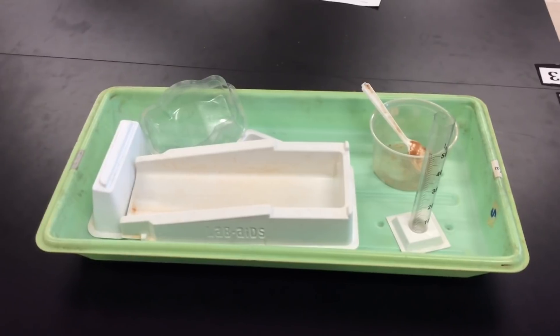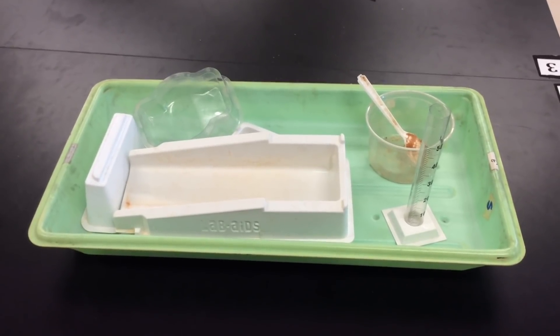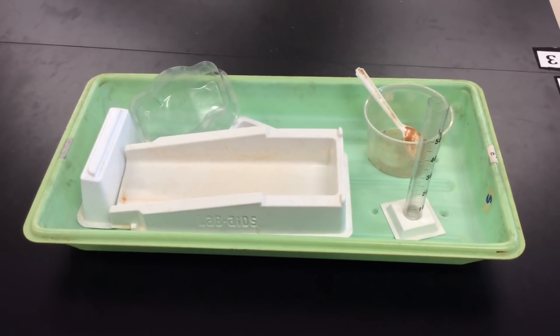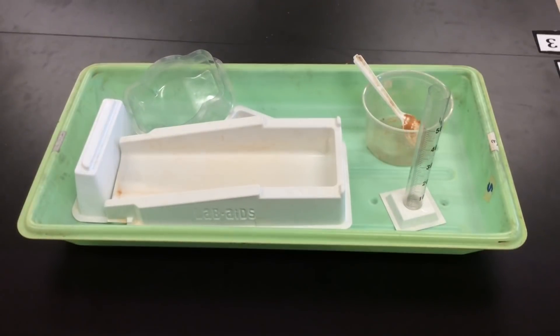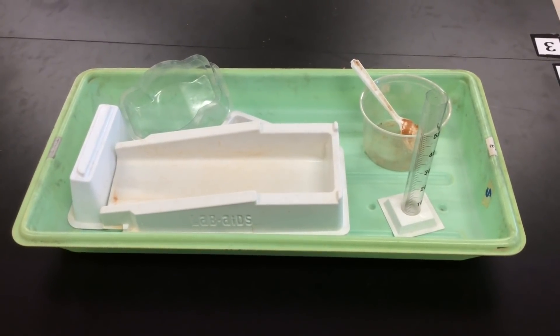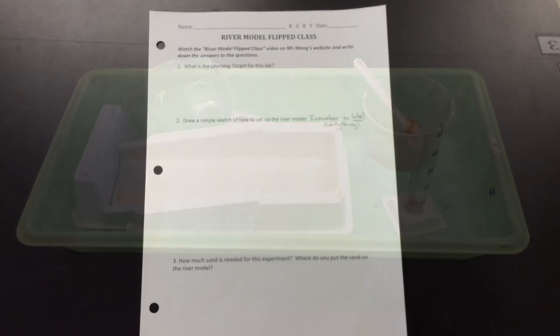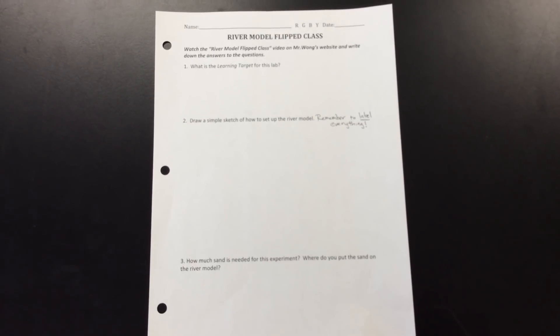Once you have finished and have everything rinsed off, you can return everything to the green bin and return it to the counter. You and your group can then move on to answering the questions on the analysis sheet. All right, so at this point you want to just make sure that you have everything on this sheet filled out, including the front and the back.